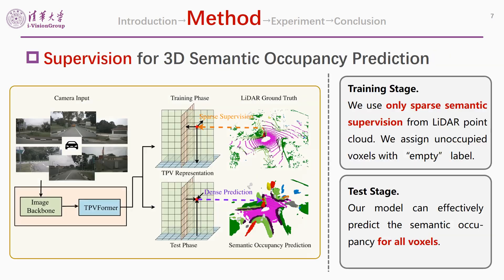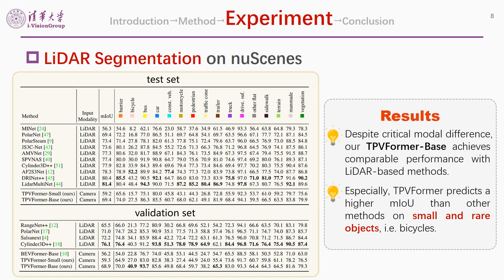As the first attempt in the literature, we propose and advocate a practical training and test setup for 3D semantic occupancy prediction. In the training stage, we use only sparse semantic supervision from lidar point clouds and assign unoccupied voxels with an empty label. In the test stage, our model can effectively predict the semantic occupancy for all voxels. This setting avoids the unavoidable annotation of 3D occupancy ground truth. We conduct comprehensive experiments on lidar segmentation, semantic scene completion, and 3D semantic occupancy prediction.